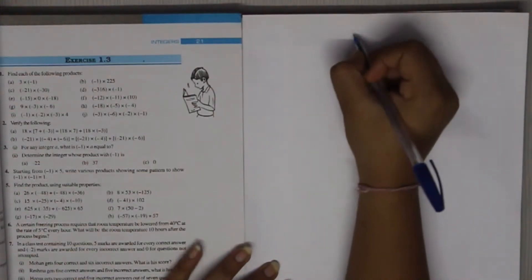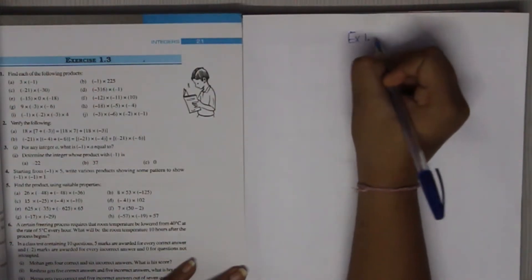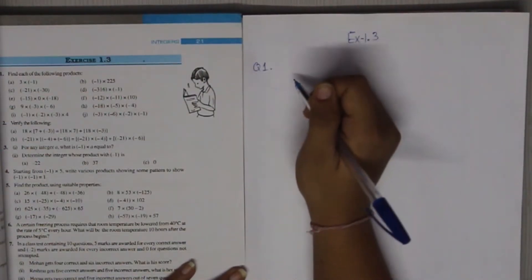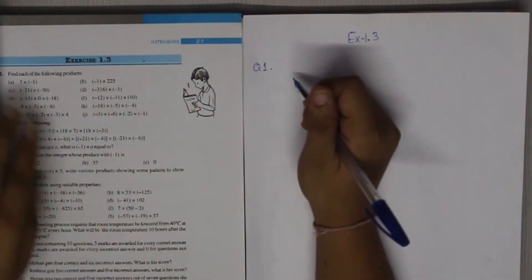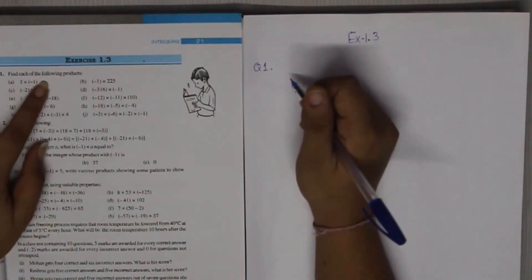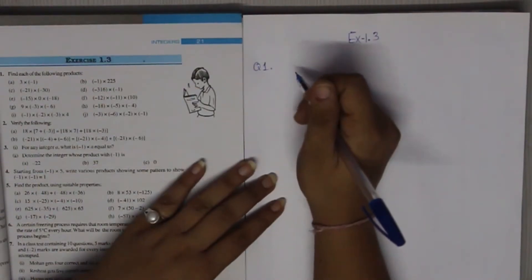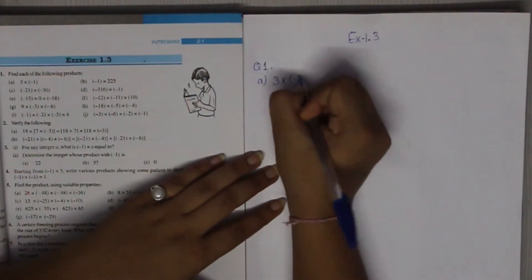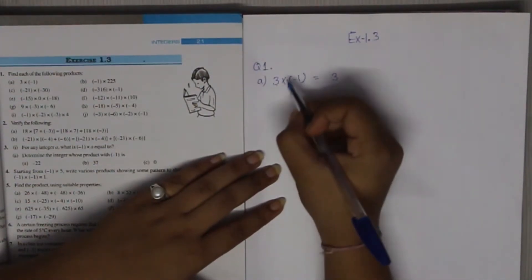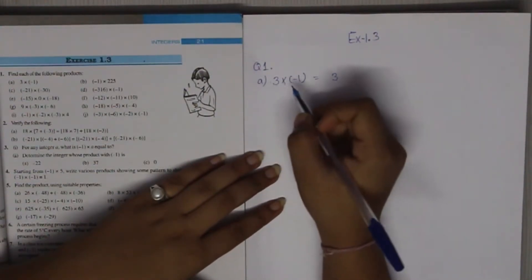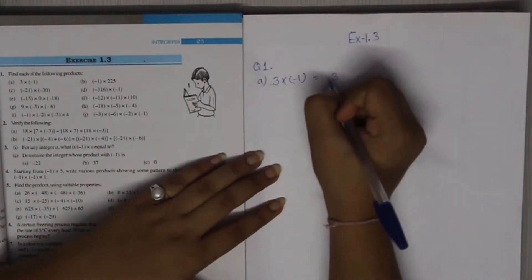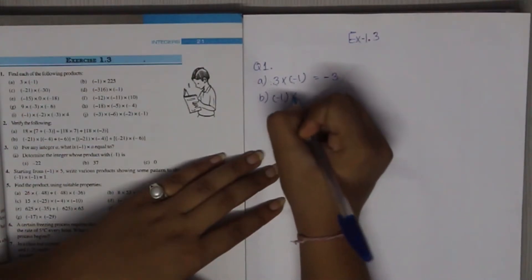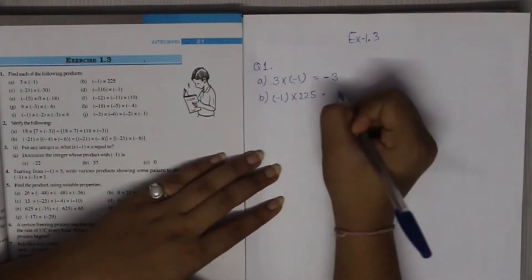Good morning. We are starting with Exercise 1.3, Question 1: find each of the following products. We need to find the product of 3 into minus 1. Three ones are 3, and plus multiplied by minus gives a negative integer, so minus 1 into 225 — 225 ones are 225.